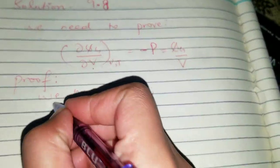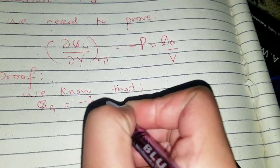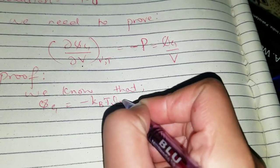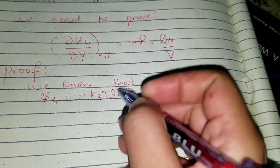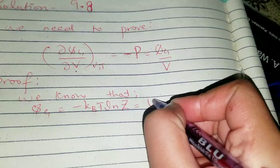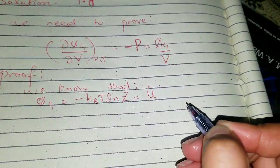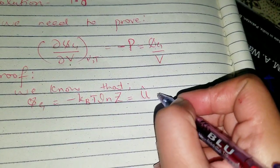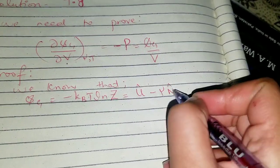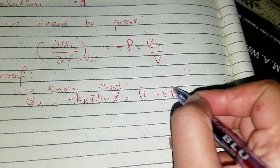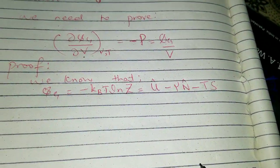The grand potential in general is given by: Ψg = -kBT ln(Z), which further equals the average internal energy U̅ minus μN̅, where N̅ is the average number of particles, minus TS.